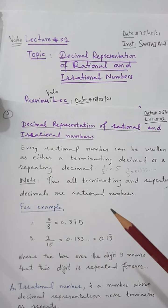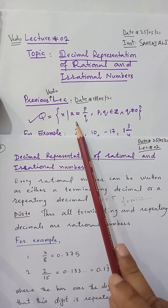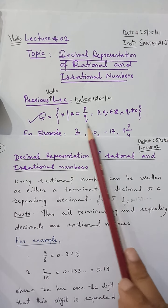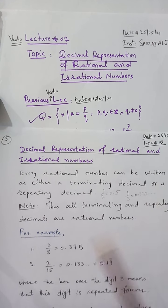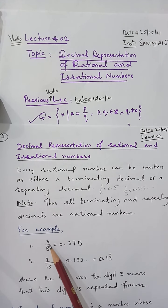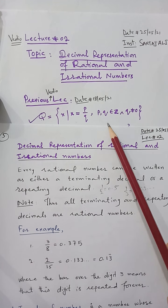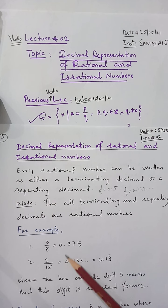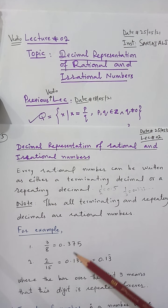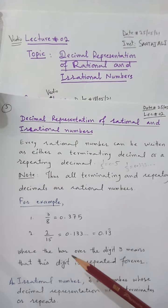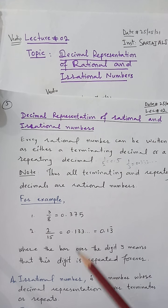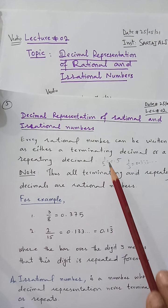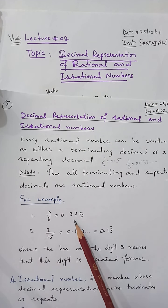For example, 3/8: according to the definition, p = 3 and q = 8, both are integers and q ≠ 0, so 3/8 is rational. If 3/8 is given in decimal representation, you see that after the decimal there are a finite number of digits — 3, 7, and 5 — so it is a terminating decimal. Terminating and repeating decimals are always rational, so 3/8 is a rational number.